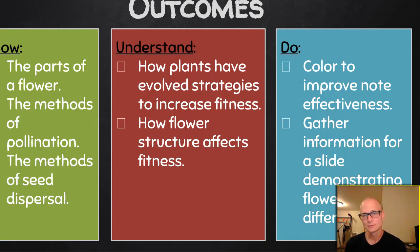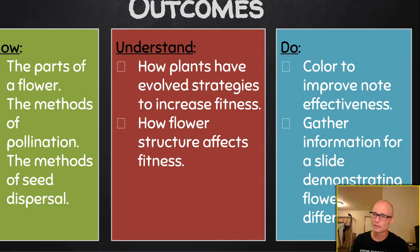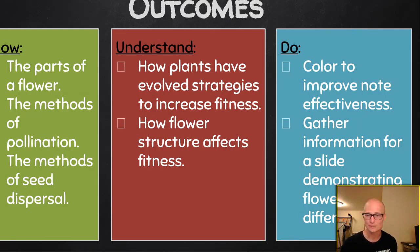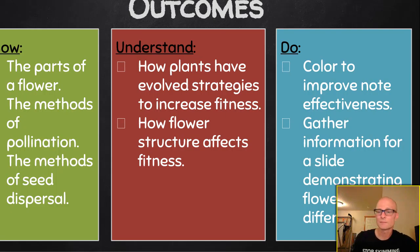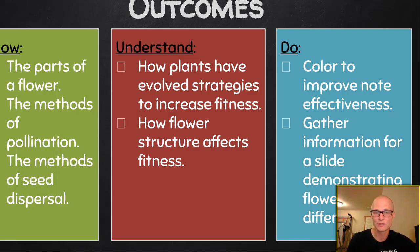We're going to actually do some coloring. We don't do much of it nowadays, but it's really good for us — good for our brain, manual dexterity, fine motor skills, all that. It also helps us identify information and remember it. Then I'm going to ask you to gather some information and present it on a slide with flower types: complete, incomplete, perfect, and imperfect — and it's all there on Google Classroom.